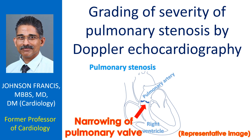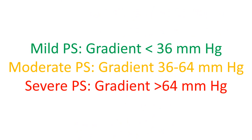The highest value obtained from multiple views should be used. Doppler derived gradient has good correlation with catheterization derived gradient. It should be remembered that Doppler measures peak instantaneous gradient while cath measures peak-to-peak gradient. Grading of severity is based on peak jet velocity and the corresponding gradient.